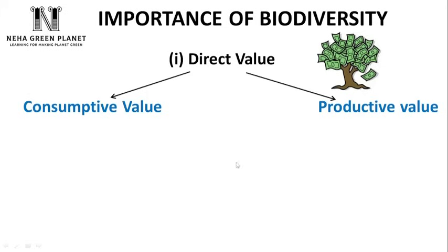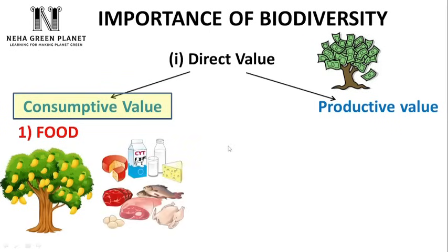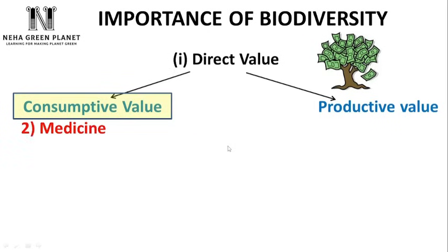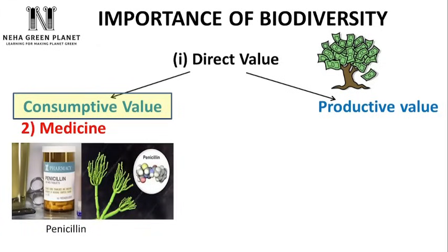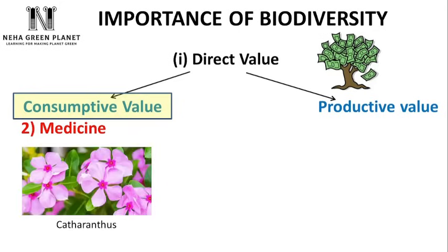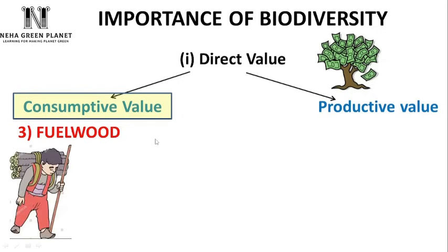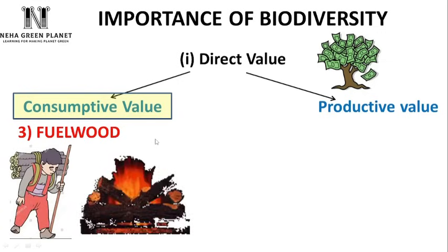Consumptive value: the substances we get from nature and use in the same manner, with a price attached. For example, food — we obtain a large number of fruits and food items from nature. Second is medicine — many medicines are directly extracted from plant parts; for example, penicillin, an antibiotic prepared from the fungus Penicillium; digitalis, a plant used for manufacturing digitalin, a cure for heart diseases; and Catharanthus, which plays a very important role in curing cancer. Another consumptive value is fuel wood, collected from the forest and used for cooking.